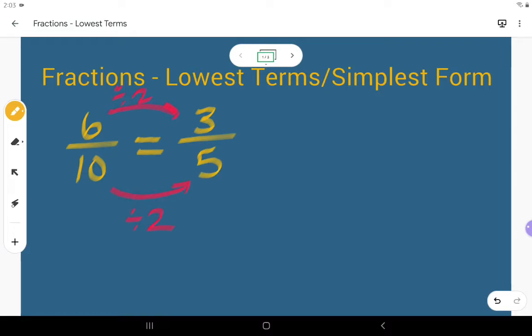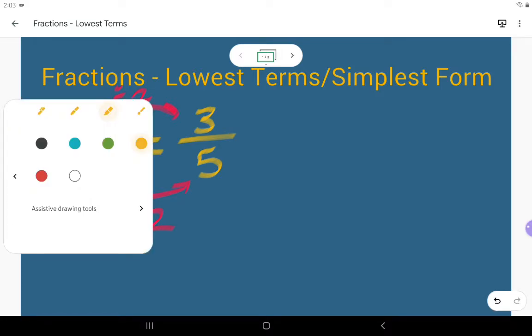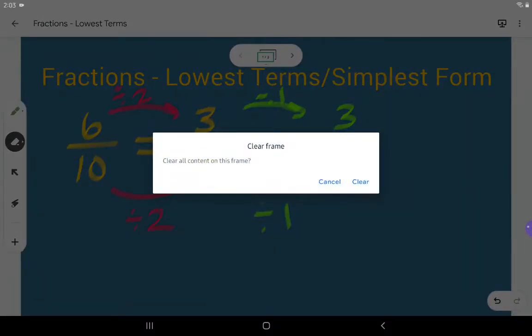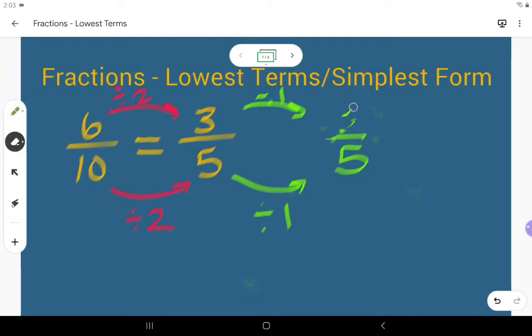Now this fraction 3 fifths or 3 over 5 is in lowest terms. The only thing I could divide both numbers by is 1. If I divide both numbers by 1, I just end up getting 3 over 5, which is the same thing. So if the only thing you can divide by is 1, then we don't actually need to do that—we can stop.